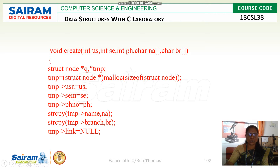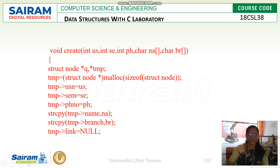Here, star Q is one node pointer and TMP (temporary) is another node pointer. We need to create a new node by allocating memory with respect to the size of that node. That memory is assigned to the temporary variable, which is a node pointer variable. From that pointer variable, the members are assigned: temp->USN equals US, temp->SEM equals SE, temp->phone number equals PH. Likewise, all five member variables are assigned.